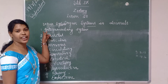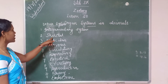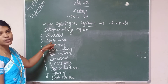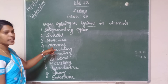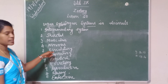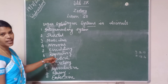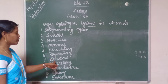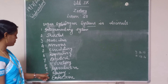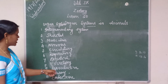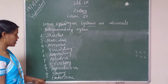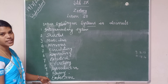The organ systems are: first, integumentary system; second, skeletal system; third, muscular system; fourth, nervous system; fifth, circulatory system; sixth, respiratory system; seventh, digestive system; eighth, excretory system; ninth, reproductive system; tenth, sensory system; and the last one, endocrine system.